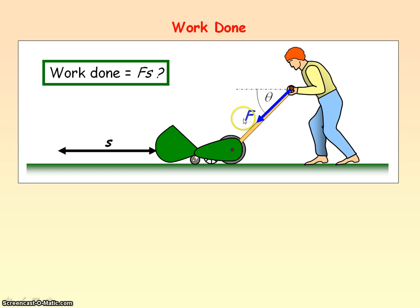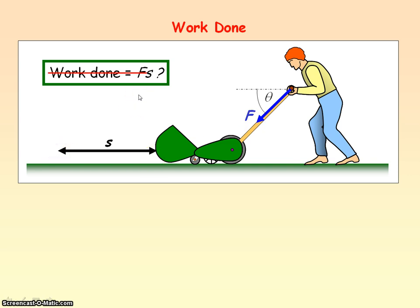In this case, we have a force F being applied along the handle of the lawnmower, but this force F is making an angle of theta relative to the horizontal. The lawnmower is moving a distance S in the horizontal direction. So is the work done equal to the force F times the distance moved S? Well, no, because remember from the definition of work done, S is the distance moved in the direction of the force, and the force F is not in the same direction as the distance moved S.